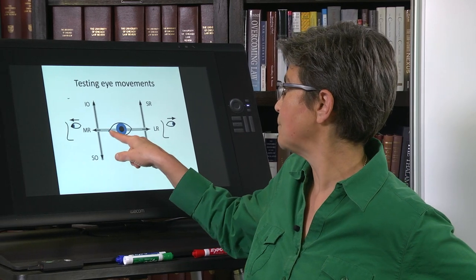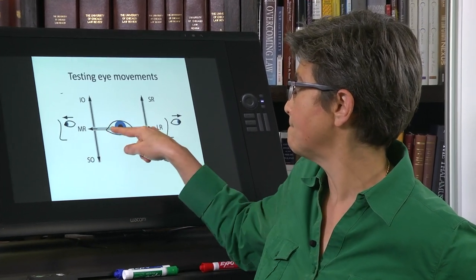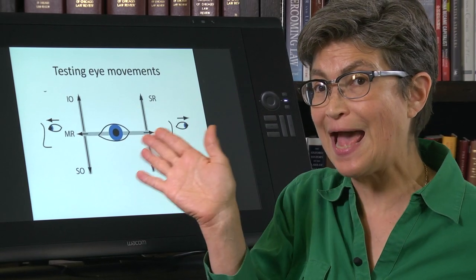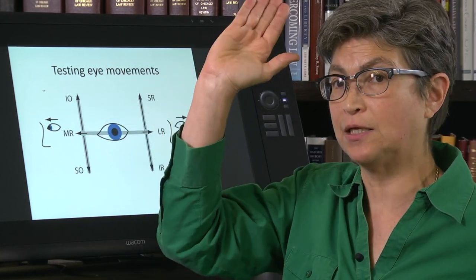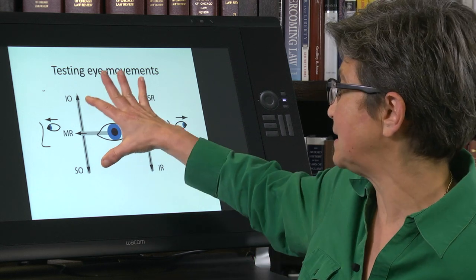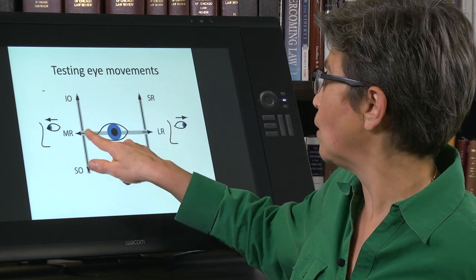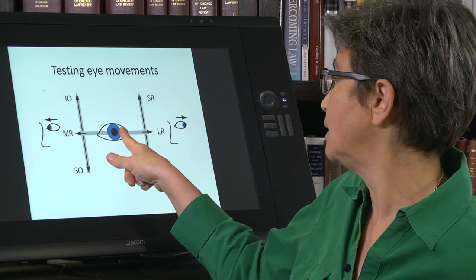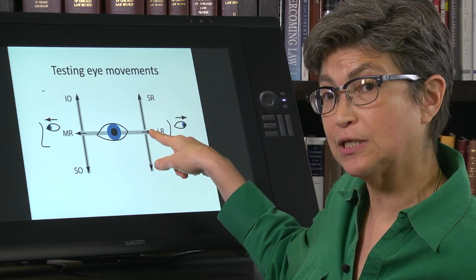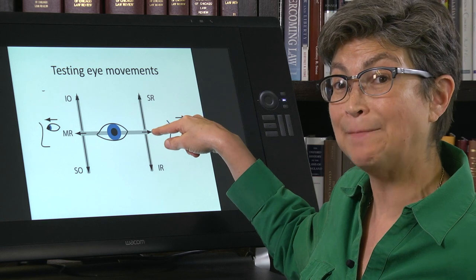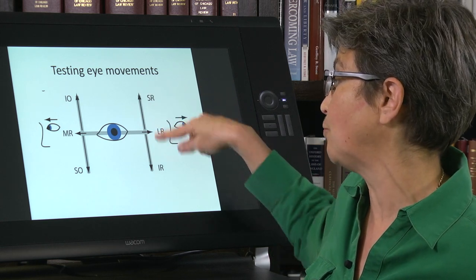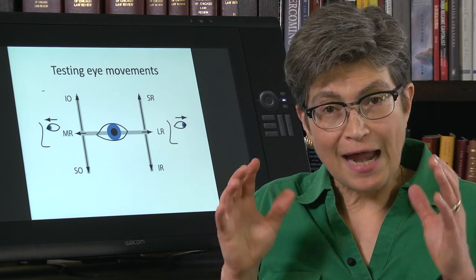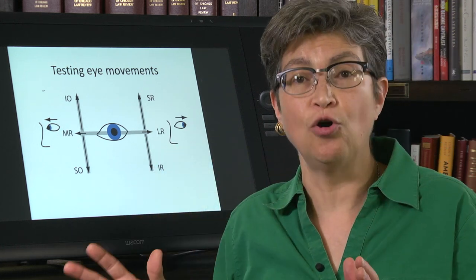All right. So you're moving it. You're testing them as they adduct their eye. And then from the adducted position, you're asking them to elevate it and depress it. And that tests the oblique muscles. Whereas when you abduct the eye, that initially uses the lateral rectus. And from that abducted position, you can now test the superior rectus and the inferior rectus. That's the take-home message.